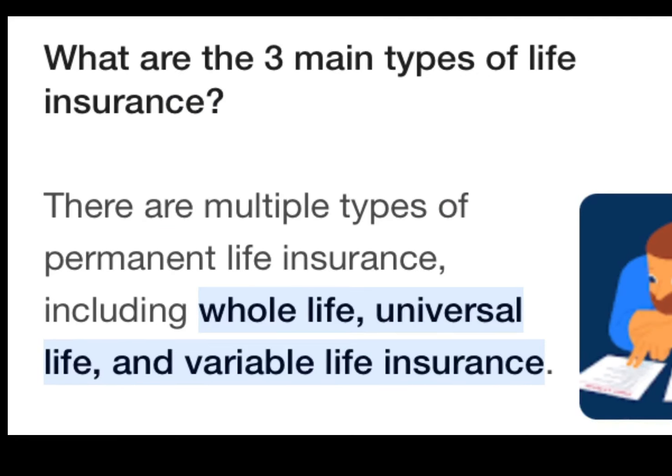The next question is: what are the three main types of life insurance? There are three main types. Number one is whole life insurance, the second is universal life insurance, and the third is variable life insurance. These are the three main types of life insurance.